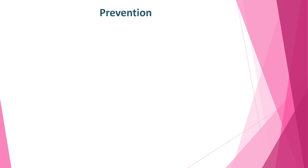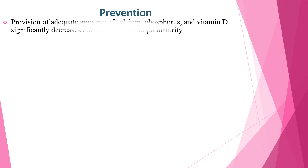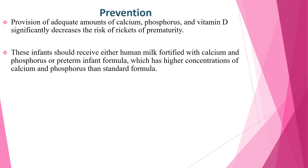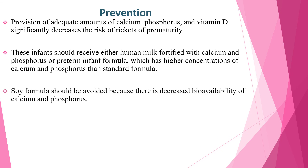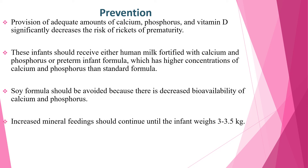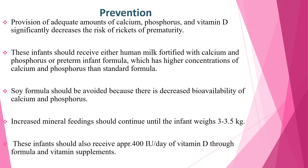Regarding prevention: provision of adequate amounts of calcium, phosphorus, and vitamin D significantly decreases rickets of prematurity. Parenteral nutrition is often necessary initially in very premature infants. These infants should receive either human milk fortified with calcium and phosphorus, or preterm infant formula, which has higher concentrations of calcium and phosphorus than standard formula. Soy formulas should be avoided because of decreased bioavailability of calcium and phosphorus. Increased mineral feeding should continue until the infant weighs 3 to 3.5 kg. Premature infants should also receive approximately 400 international units per day of vitamin D through formula and vitamin supplements.